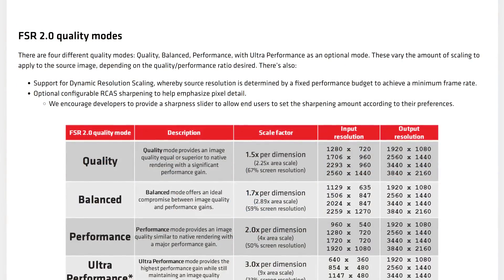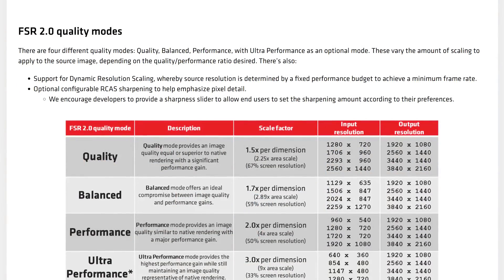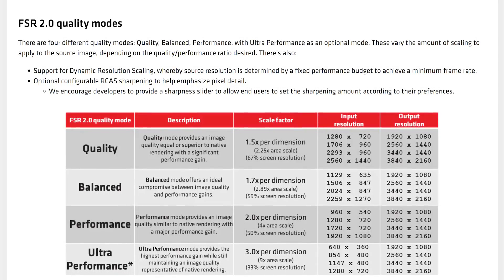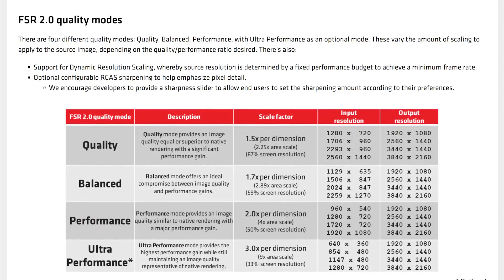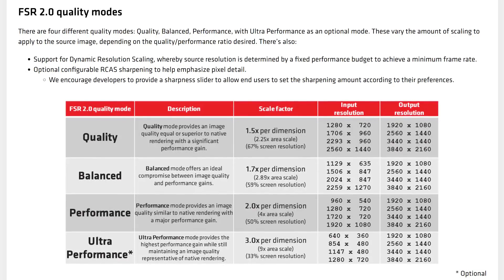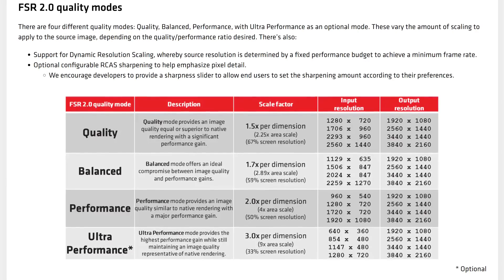FSR 2.0 will offer a very similar set of quality settings to DLSS, with quality, balanced, performance, and ultra-performance modes. The highest mode, quality, will upscale at a factor of 1.5x — taking a 1440p image and upscaling to 4K as an example. The performance mode uses a 2x factor, upscaling 1080p to 4K, and the optional ultra-performance mode uses a 3x factor, taking 720p up to 4K. NVIDIA has previously advertised their ultra-performance mode as suitable for 8K gaming, so this mode isn't going to be useful for most gamers who would probably top out at the performance mode or higher settings.